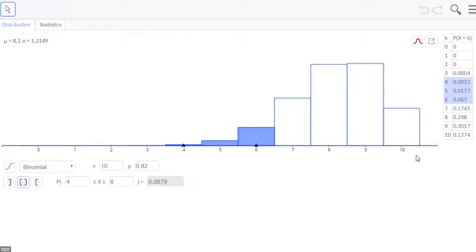For part B, where we said what's the probability that she makes 9 or 10 free throws, we want 9 or 10. So what we want to do is end up shading those two. You could also look on this right-hand side and add those probabilities together, taking that 0.3017 plus 0.1374, and that would work just as well.